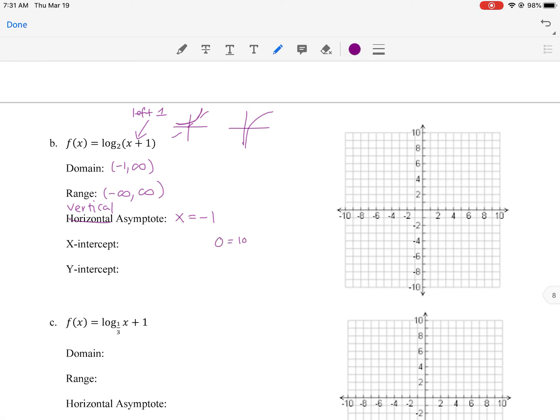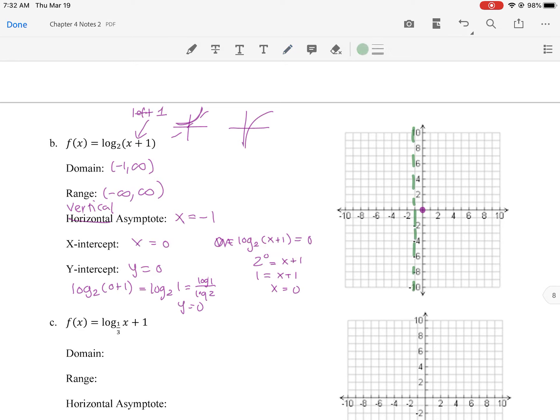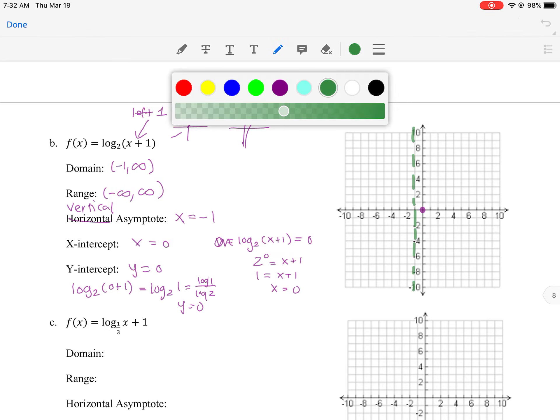Okay. X intercept. So zero equals log base two of x plus one. Or actually, I think people like writing it over here. So two to the zero equals x plus one. One equals x plus one. So x equals zero is our x intercept. Okay. Now let's do the y intercept. Log base two of zero plus one. So log base two of one. And saying, hey, two to what power equals one? Or you can always do like log of one divided by log of two in your calculator. And you also get zero. So therefore, what that's saying is, hey, you know, my graph crosses right here. So the x and y intercept are the same.